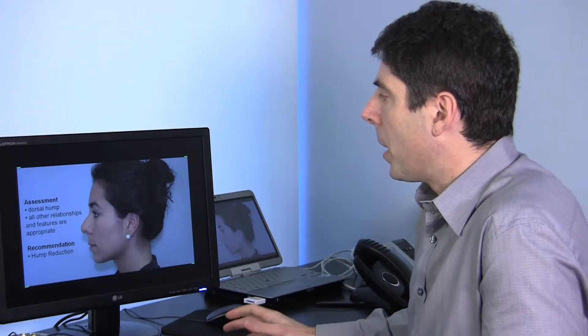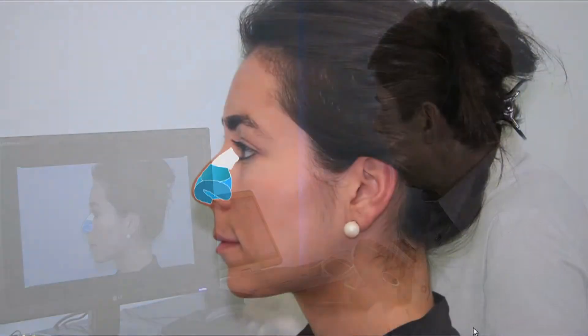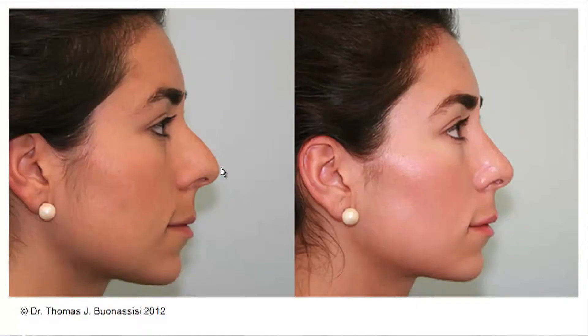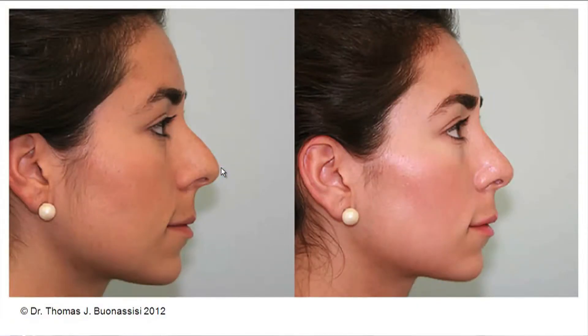So I recommended a hump reduction and what we did was we took down the cartilage portion of her hump and the bone portion of her hump and that's taken out of course from underneath the skin. That red section is the area that's removed and once that's removed, it allows the skin to settle down.